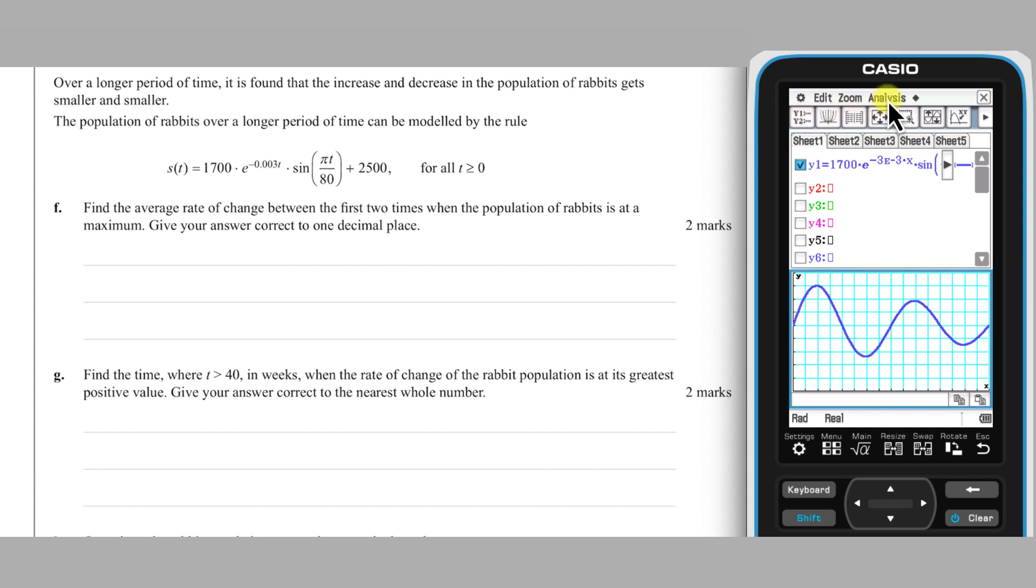I'll tap Analysis and from the G-Solve menu choose Max. Record the coordinates of this point so that we can use them to calculate the average rate of change to one decimal place.